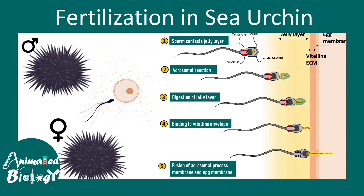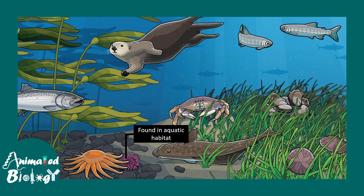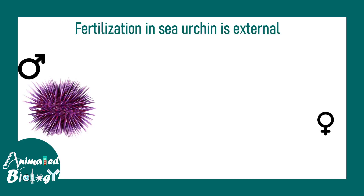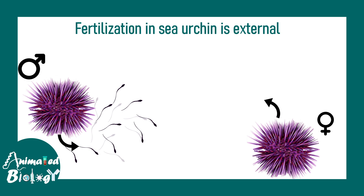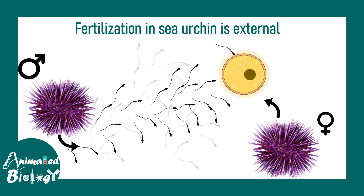This video is about fertilization in sea urchin. The sea urchin is an aquatic animal found mostly in the sea and nearby regions of the shore. Fertilization in sea urchin is external, meaning it happens outside the body. A male sea urchin releases its sperm and a female releases its ovum into the environment. The sperm eventually migrates toward the ovum and fertilizes it.